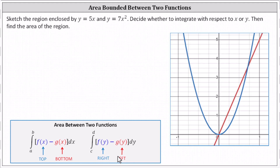Because we are given functions of x, let's first analyze the area from top to bottom, or vertically. Notice the bounded area over the entire interval for x is bounded above by the line and below by the parabola, which indicates it will be easier to integrate with respect to x to determine the bounded area.